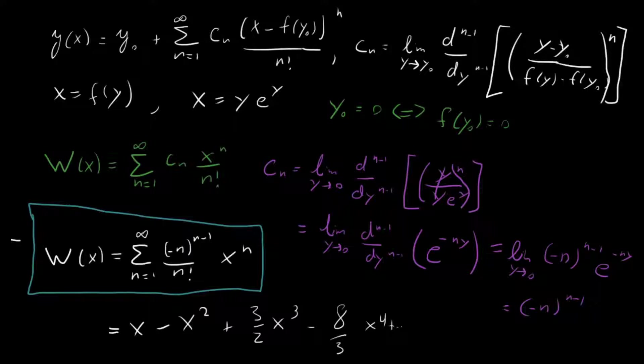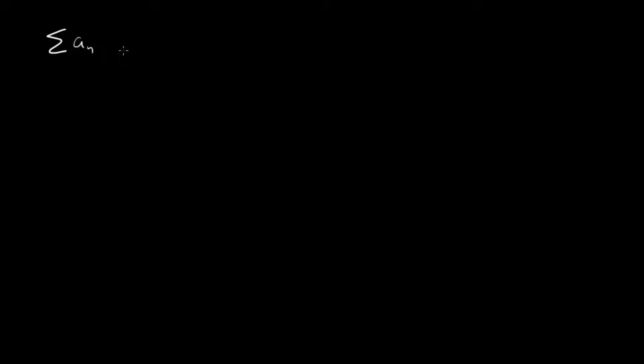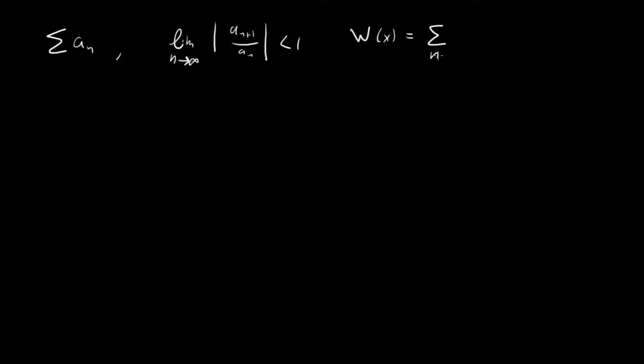A reminder: for the ratio test, a series Σa_n converges absolutely if the limit as n goes to infinity of |a_(n+1) / a_n| is less than one; if it's greater than one, it diverges. Our series is W(x) = sum from n=1 to infinity of (−n^(n−1) / n!) · x^n.